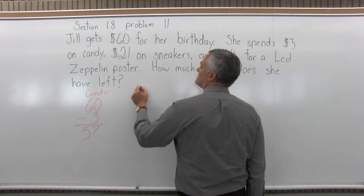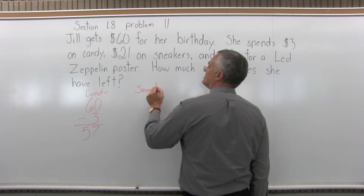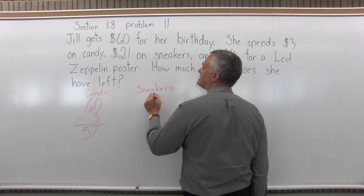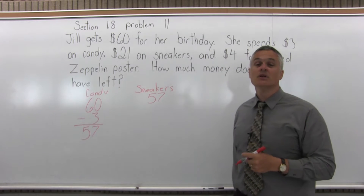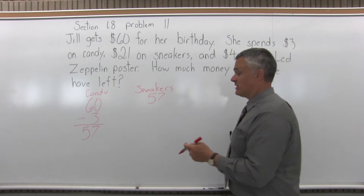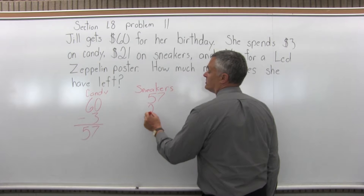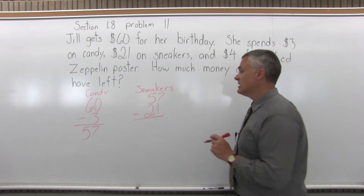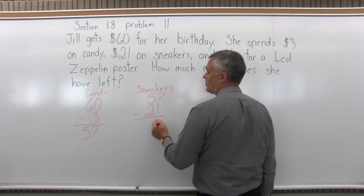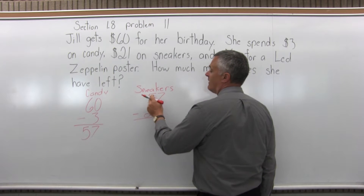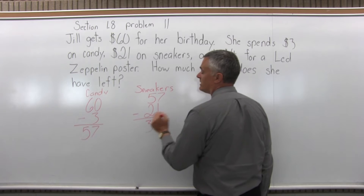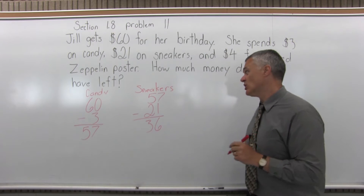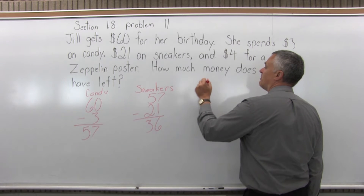So now let's consider what happens with the sneakers. By the time we get to the sneakers, we're not starting with $60 — we're starting with $57, because Jill spent $3 for the candy. So we're going to subtract $21 for the sneakers. $57 minus $21 is $36. After the sneakers, we're down to $36.